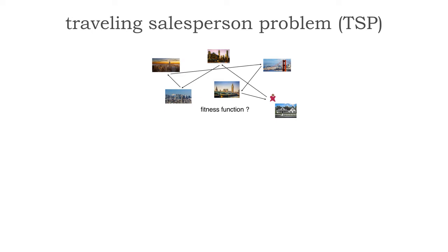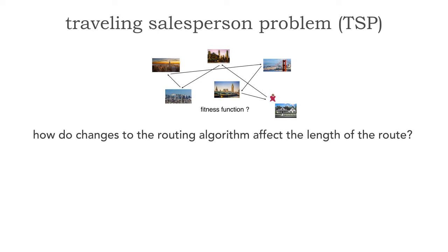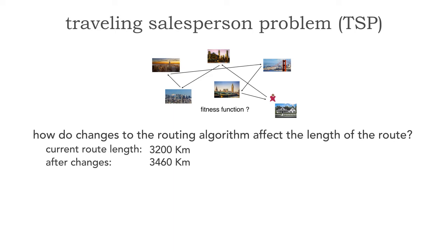Let's use the typical one: the length of the route. We can ask this question as a fitness function: how do changes to the routing algorithm affect the length of the route? As we start making changes to the system, did it impact that characteristic — such as the length of the route? Our current route length is 3200 kilometers. We made some changes to the algorithm, and after those changes it's now 3460 kilometers. So now we can fail that test — whatever change was made has increased the length, cost, or time.